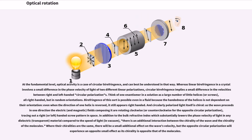At the fundamental level, optical activity is a case of circular birefringence, and can best be understood in that way. Whereas linear birefringence in a crystal involves a small difference in the phase velocity of light of two different linear polarizations, circular birefringence implies a small difference in the velocities between right and left-handed circular polarizations.